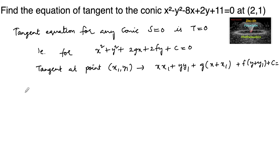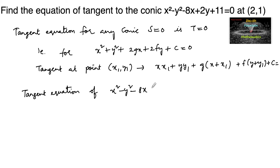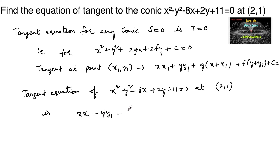So for the given conic, the equation of tangent for x squared minus y squared minus 8x plus 2y plus 11 equals to 0 at (2, 1) can be given as: xx1 minus yy1 minus 4(x plus x1) plus (y plus y1) plus 11 equals to 0, substituting the point (2, 1).